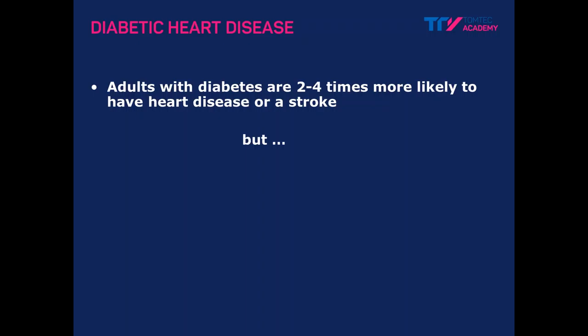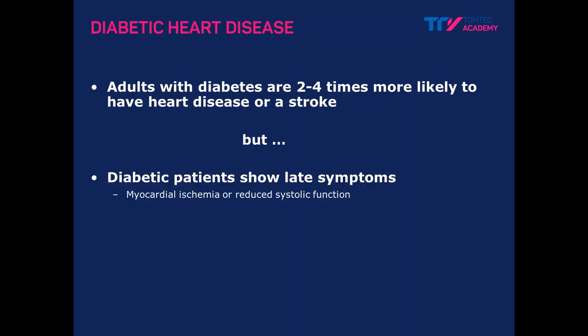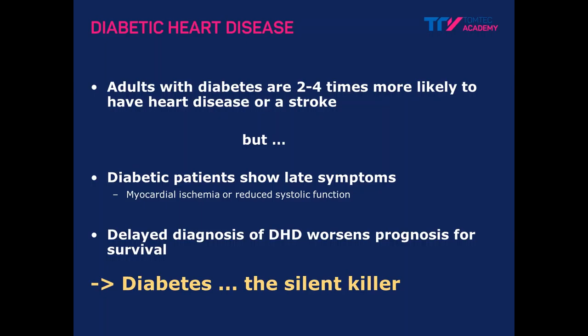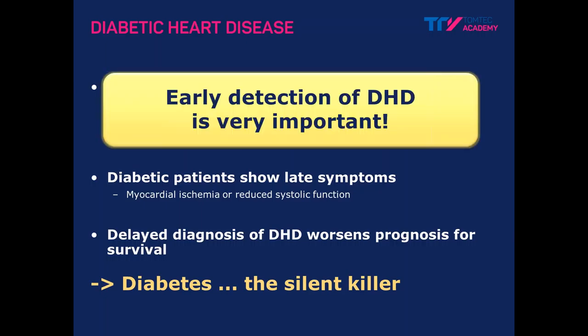The problem is that diabetic patients show very late symptoms. They have a long preserved ejection fraction and show late symptoms of myocardial ischemia or reduced systolic function. With this delayed diagnosis, we have an adverse prognosis for survival. Diabetes can be called the silent killer, as subclinical changes occur early but can be diagnosed too late. That's why early detection of diabetic heart disease is, in our opinion, very important. I would like to show you how this can be done with new techniques in echocardiography.